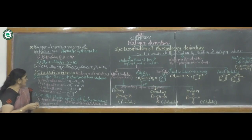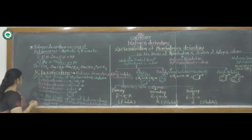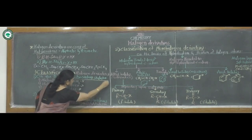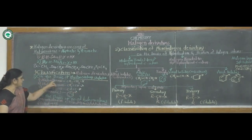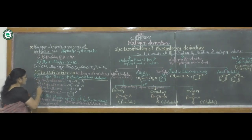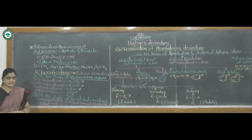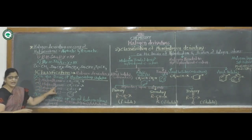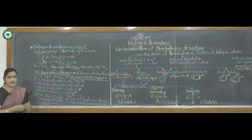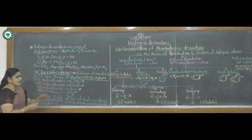Classification. These halogen derivatives are first classified on the basis of hydrocarbons — that is, on the basis of hydrocarbon skeleton. They are classified into four types: first, haloalkanes; second, haloalkenes; third, haloalkynes; and fourth, haloarenes.